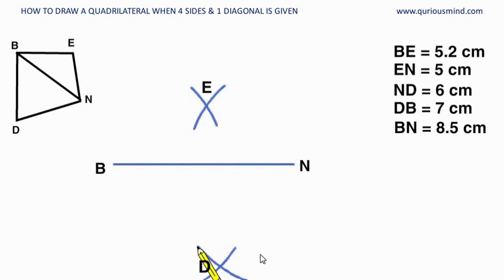So we got all the four points of the quadrilateral and now we will join them, and thus we have drawn quadrilateral BEND using measurements of four sides and one diagonal.